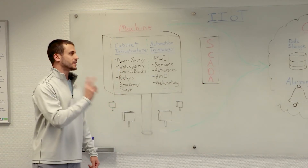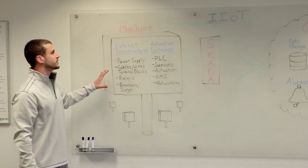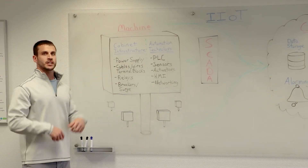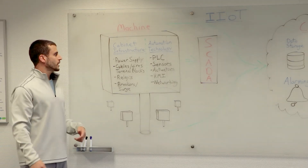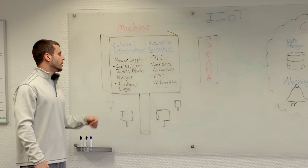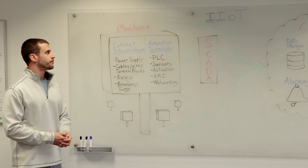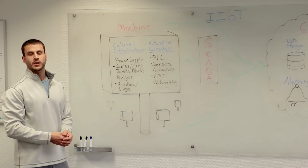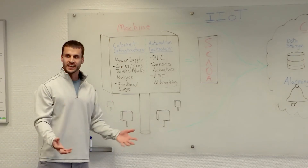When we look closely at the machine, we'll see two distinct categories of products within the control cabinet. On one side, you have what I'm referring to as the cabinet infrastructure — the components responsible for electrically powering, distributing, and protecting the machine from power. So you're going to have components like power supplies, cables, wires, terminal blocks to distribute that power. You'll have relays, and you'll protect the machine with your circuit breakers and surge protection. On the other side of the control cabinet, we have a category I'm referring to as the automation technology. The automation technology is all about the data of the machine.